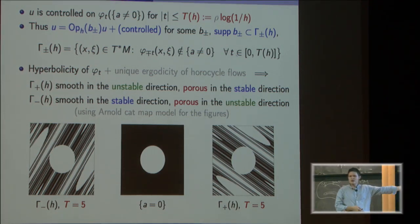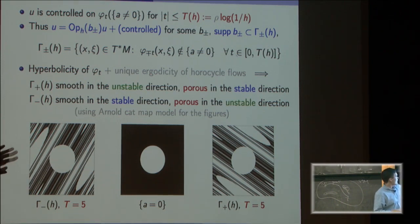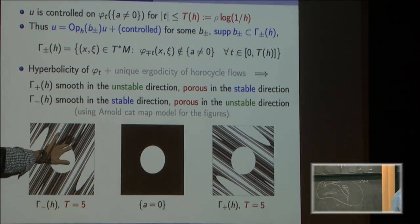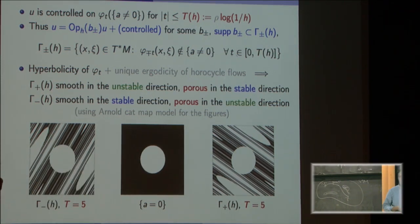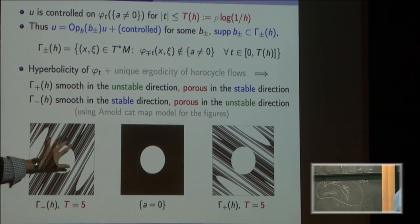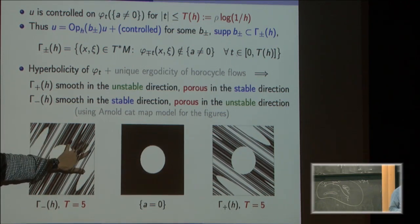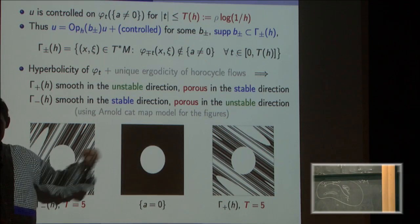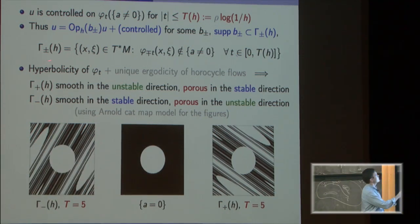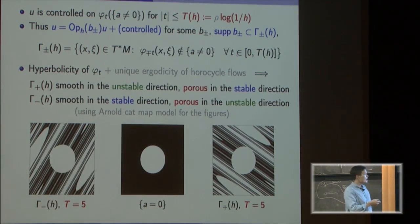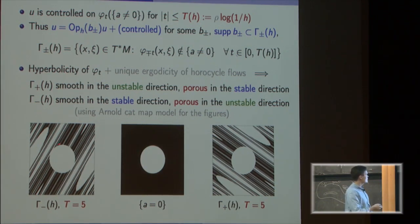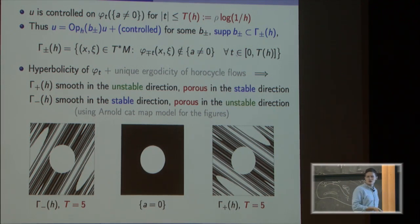So we control u on the complement of these black sets — the white regions. You can write u as localized to this set plus controlled, or localized to the other set plus controlled. These localizations correspond to Op_h(b^±). The black sets are the supports of b^±: these are things not yet controlled. We need to kill these remaining uncontrolled sets.